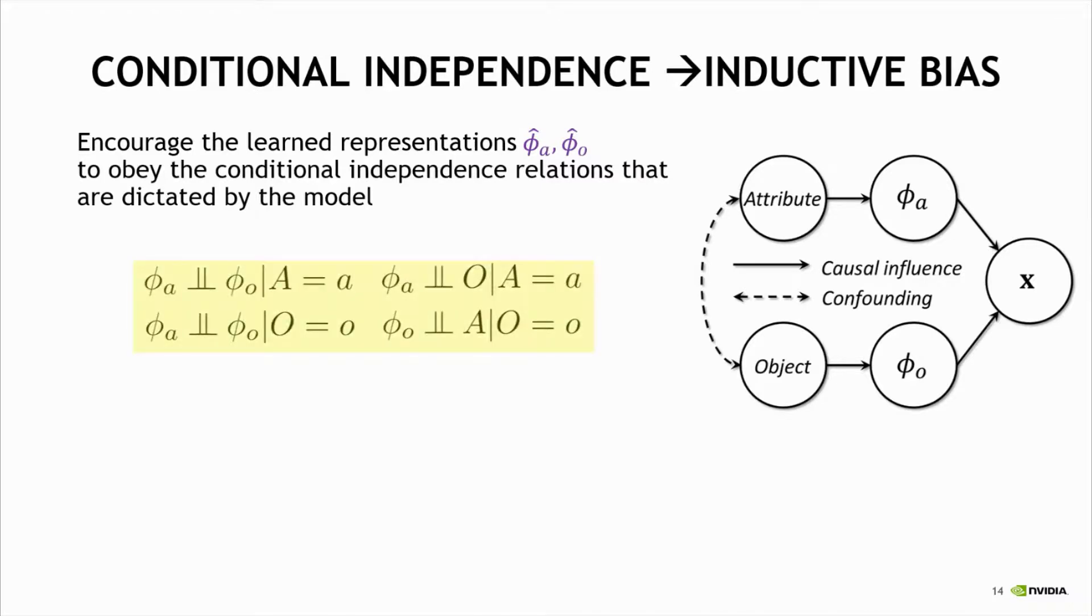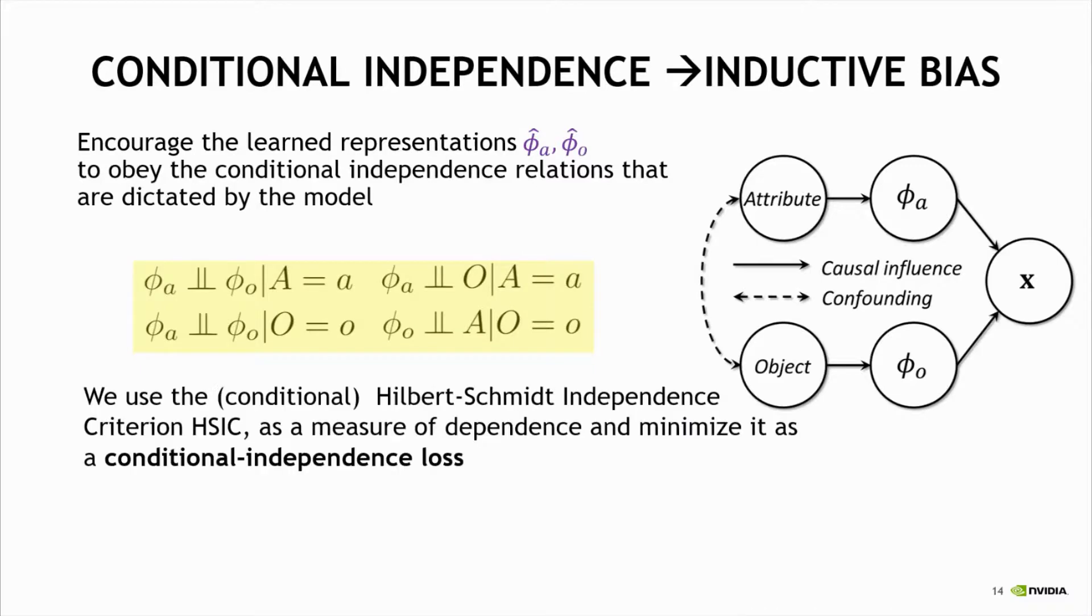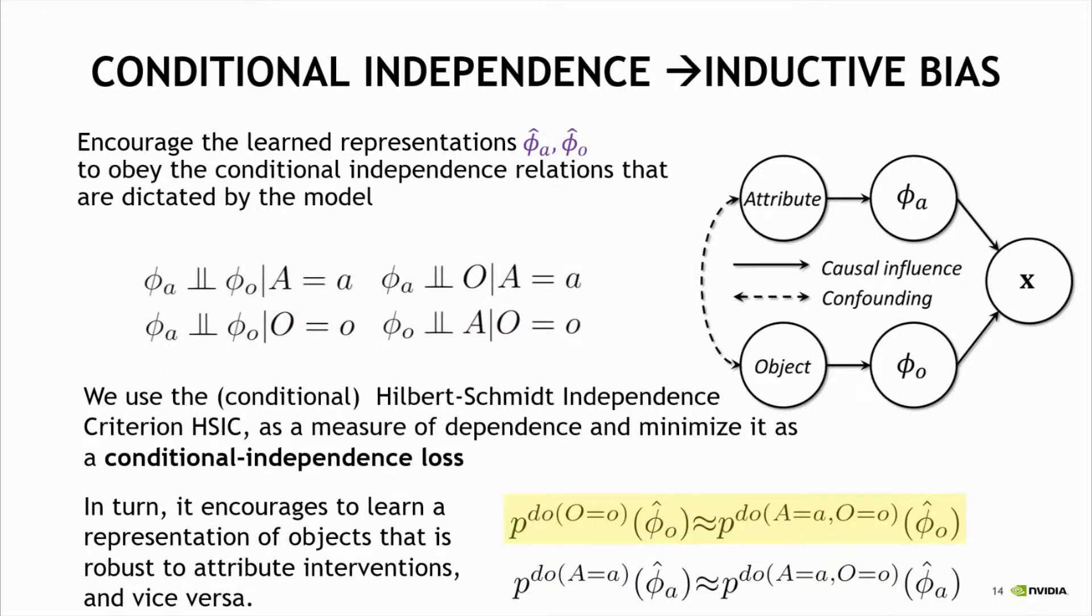We have four such independence relations. For that, we use the Hilbert-Schmidt independence criterion, which is a differentiable measure of dependence between vectors, and minimize it as a conditional independence loss term. We also show that this loss term encourages learning a representation of object that is robust to attribute interventions and vice versa.